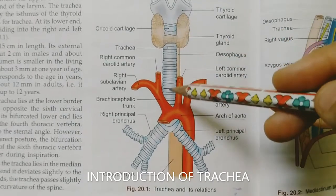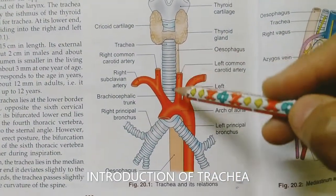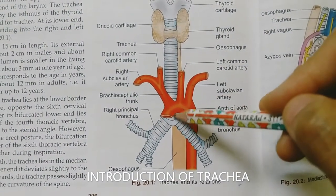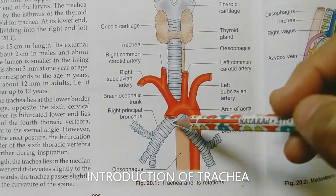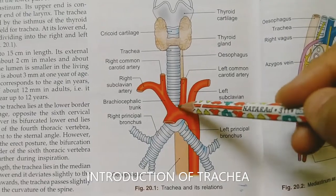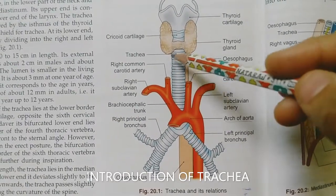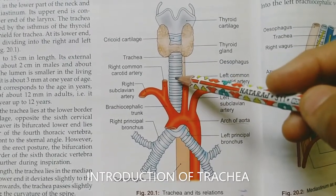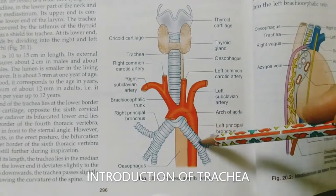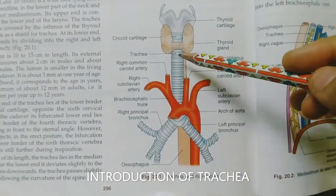This is the diagram of trachea. Trachea, also called windpipe, is a patent tube 10–15 cm long. Its upper end is at the level of cricoid cartilage or C6 vertebra, and its lower end is situated in the superior mediastinum, dividing into left and right principal bronchi. The lower end is slightly deviated to the right due to the heart. Trachea is non-collapsible due to 16–20 C-shaped cartilaginous rings that are posteriorly deficient. Its external diameter is 2 cm in males and 1.5 cm in females.